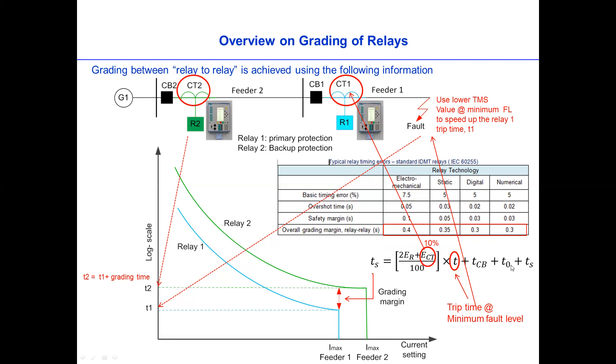And then ER is the basic error, or the timing error of the relay. Depends on whether we have the electromechanical relay, static relay, digital relay, and numerical relay. So it depends on the percentage.